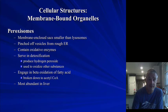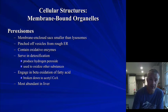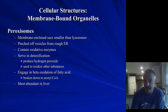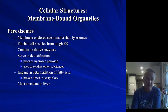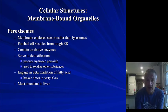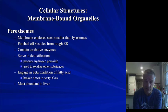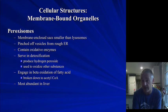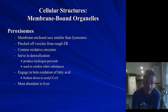Peroxisomes are really the last of the endomembrane system. These deal with reactive oxygen species and contain a lot of oxidative enzymes. They produce hydrogen peroxide, which is a reactive oxygen species that is honestly really nasty to parts of the cell — so we keep it housed in a particular organelle. You can see a lot of peroxisomes again in detoxifying organs such as the liver.